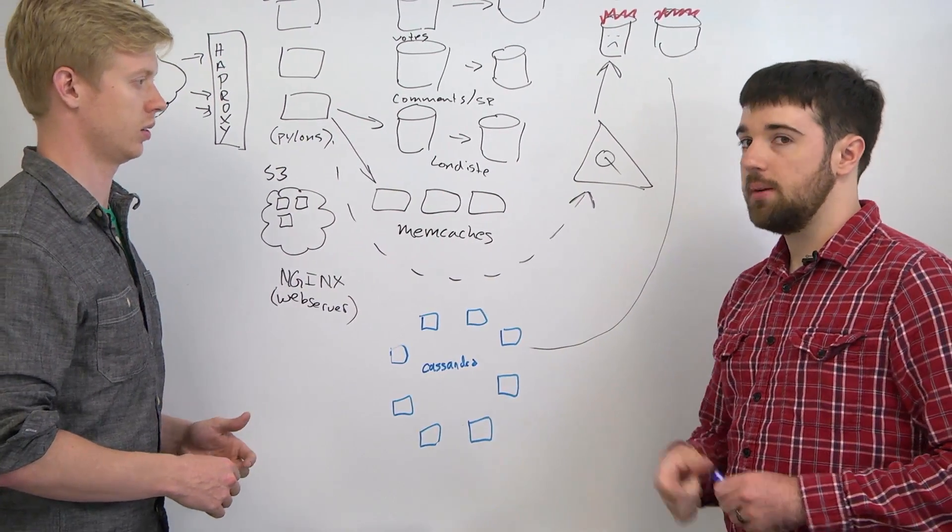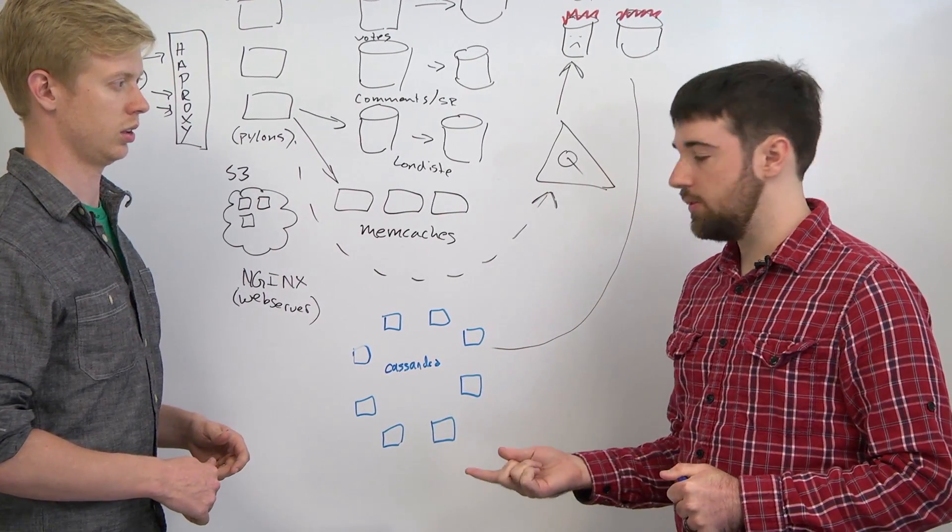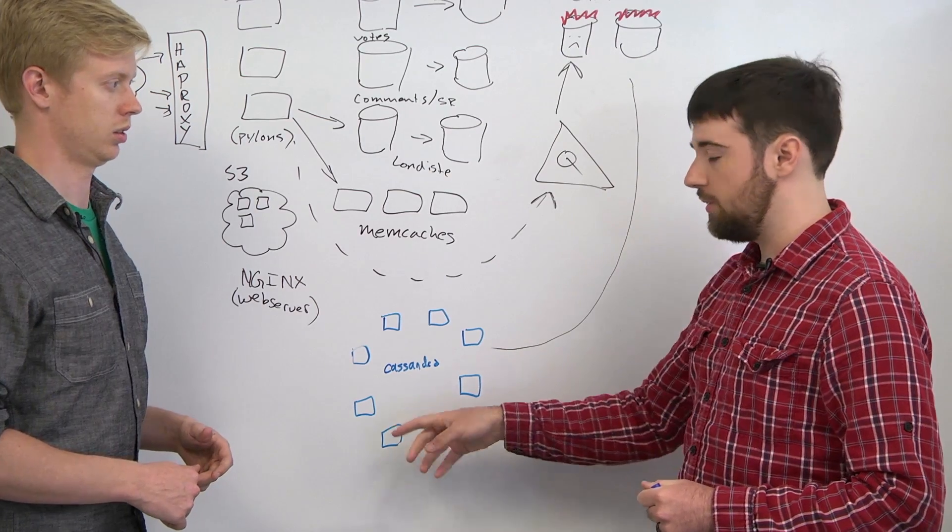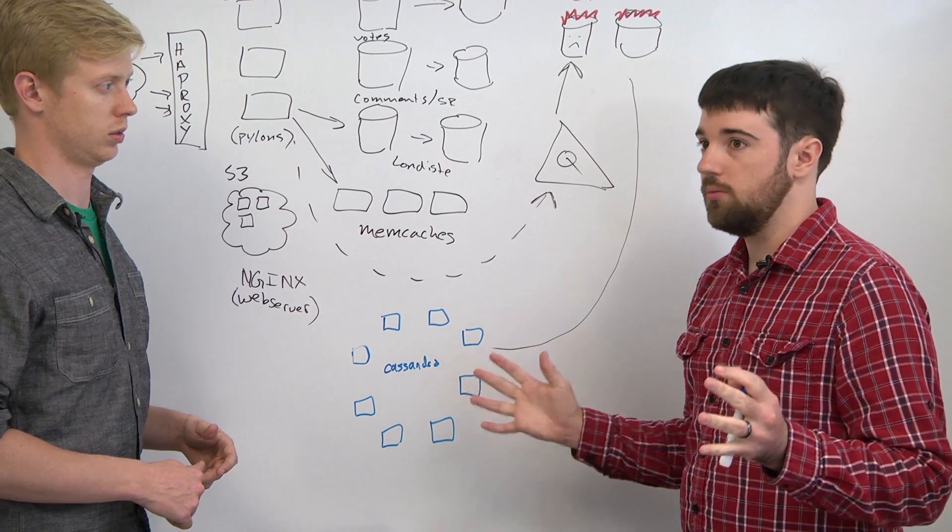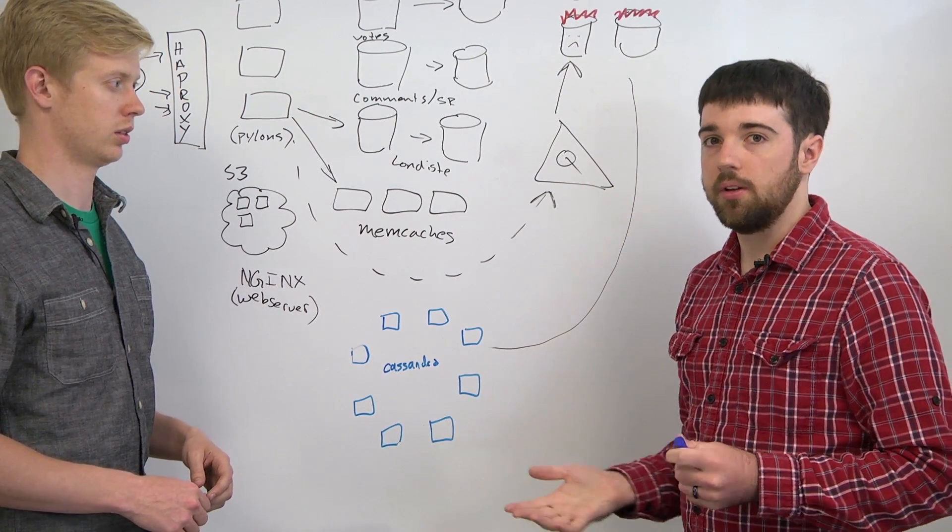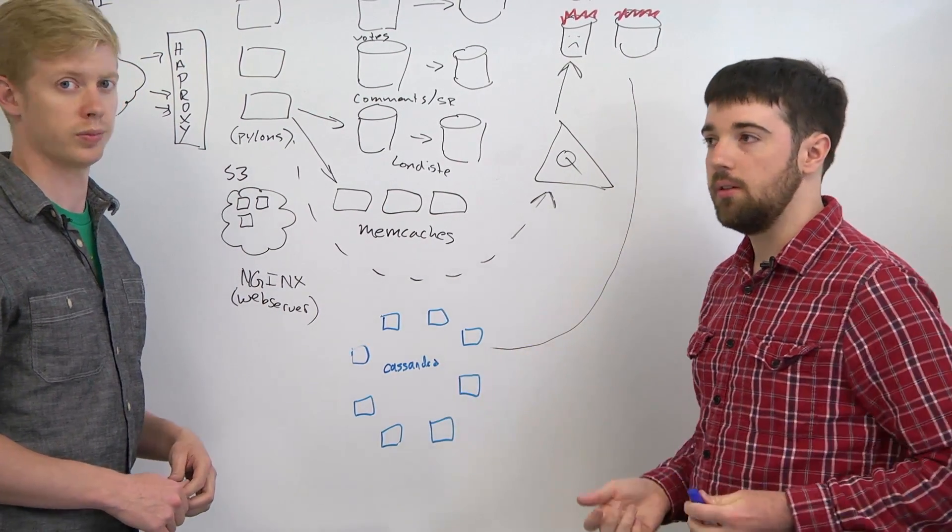And why do you do that? A read can be serviced from any one of the three if we allow it to be, which means that if one node is going slow, we don't go really slow. And also it means that if any one node just ceased to exist, we wouldn't lose all our data for that segment of the data.